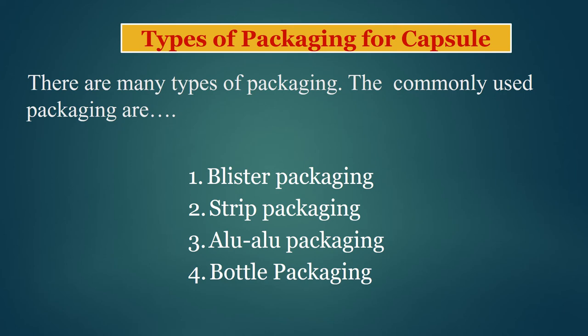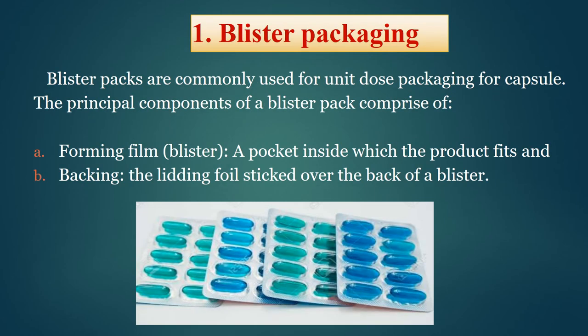Let us have a look at types of packaging. Toh capsule ki packaging ke liye hum three types ke commonly packaging materials ka use karte hain: first is your blister packaging, strip packaging, alu-alu packaging and bottle packaging. Aapne various types ki capsules intake ki hongi, usme aapne dekha hoga bahut tarike ki packaging ka use hota hai. Yahan aap dekh sakte hain, yeh ek tarah ki blister packaging hai jo bahut common hoti hai.